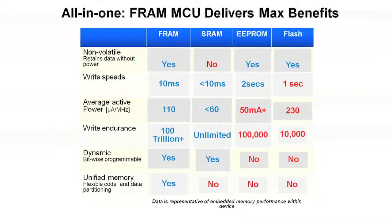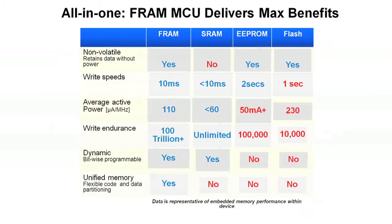Looking at the details: non-volatility — SRAM does not have that. Write speeds for FRAM are down in the 10 millisecond range. Average active power is down to 110 microamps per megahertz. Write endurance: 100 trillion plus. Bitwise programmability. And yes, unified memory.